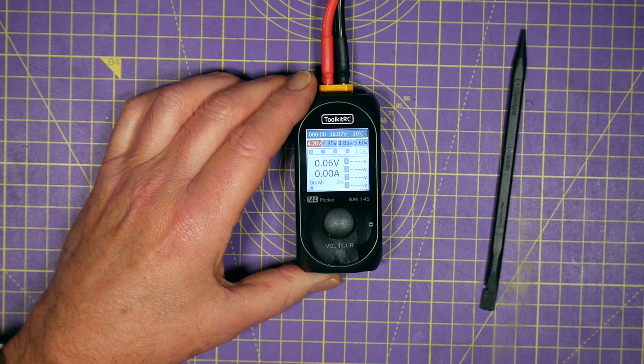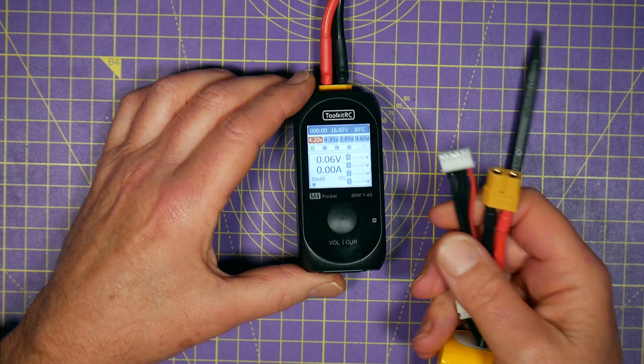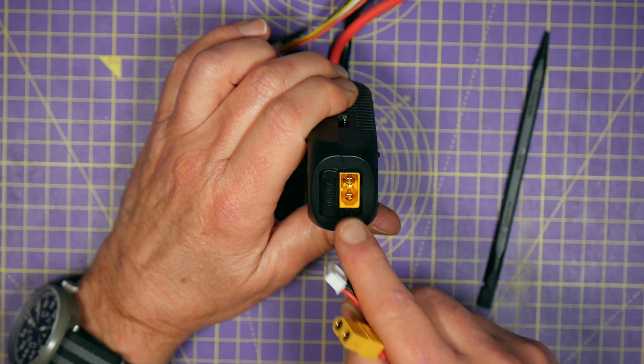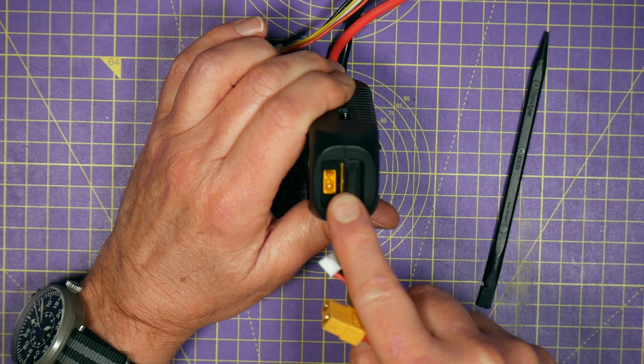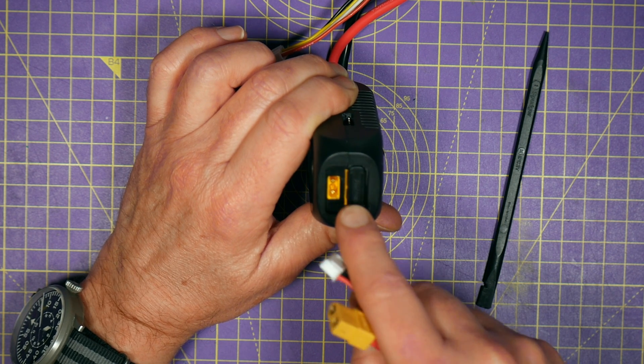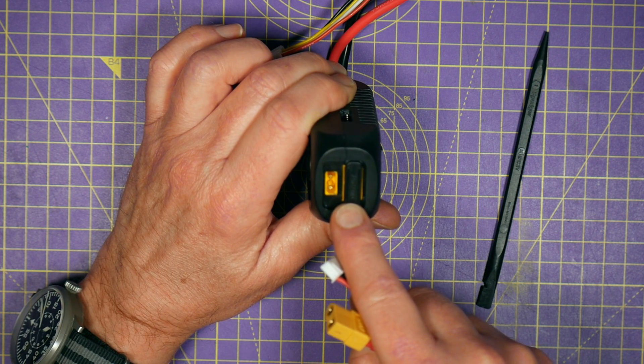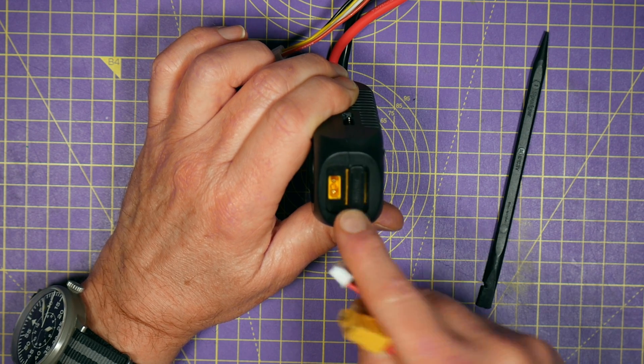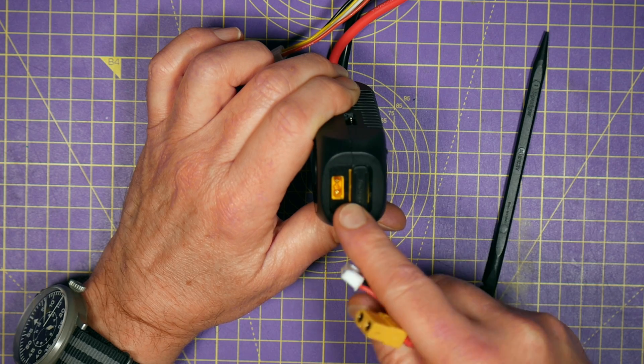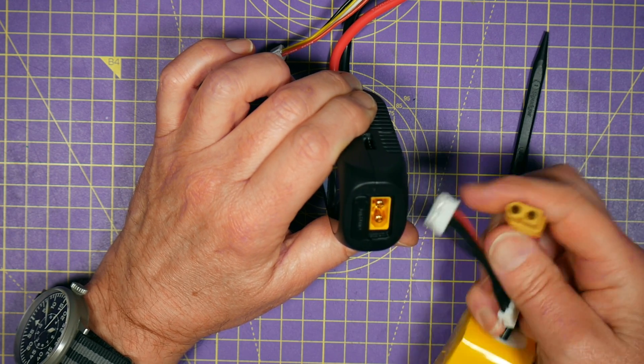So you just plug the battery in that you want to charge in the bottom here. And you've got the option of using an XT60 or an XT30 by flipping this latch. This is a nice feature that means you don't need those XT adapter plugs anymore. And they're really easy to lose in the bottom of your flight bag. And the balance lead just plugs in the side.